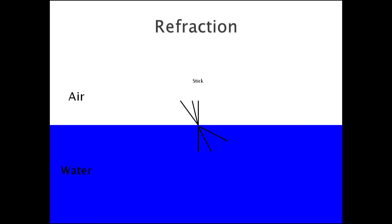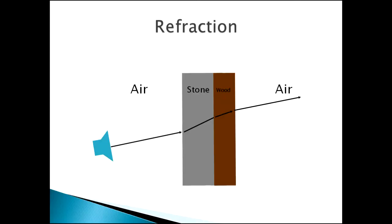Refraction is talking about how sound travels as it passes through different substances - through air or water, or when sound hits wood or brick. The angle is going to change depending on the substance. So refraction is different from reflection - it's when sound is passing through a different substance and changes its angle. This is a diagram of refraction showing sound traveling from air into stone, then stone into wood, then wood back into air - this might be a wall of your studio.